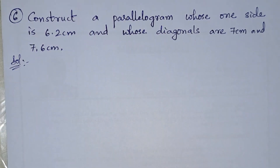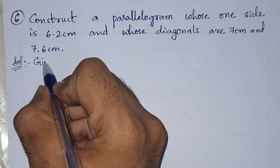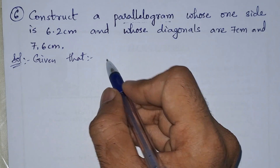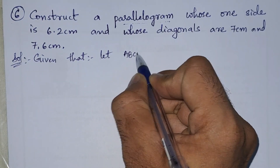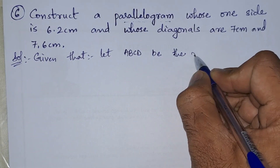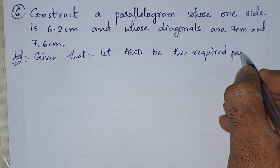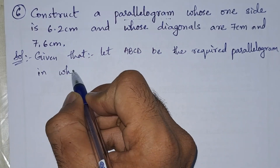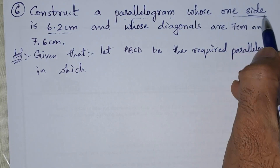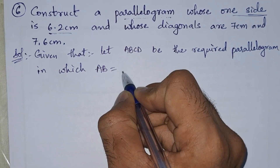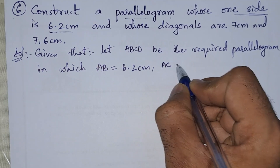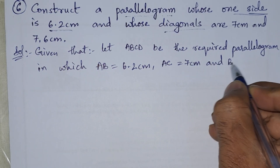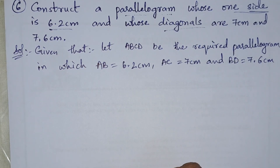Let us start the solution. Given: let parallelogram ABCD be the required parallelogram. In this parallelogram, the side AB equals 6.2 centimeters. The diagonal AC equals 7 centimeters, and the diagonal BD equals 7.6 centimeters.